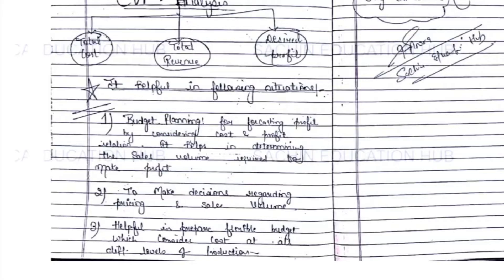Our second point is making decisions regarding pricing and sales volume. CVP analysis helps in making decisions regarding pricing and sales volume for management. It helps us take decisions regarding various types of pricing and various types of sales volume. By considering these factors, it is very easy for the manager to take decisions regarding future management purposes.